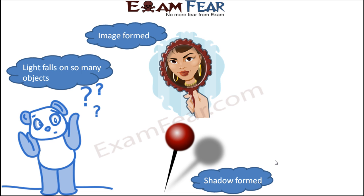Now take an example of another object — a pin. When light falls on this object, a shadow is formed. You see here the black colored shadow of this object is formed. Now again, if you take the same pin inside a dark room where there is no light, there will be no shadow formed. So the shadow will be formed only in the presence of light. This is another type of object where shadow is being formed.